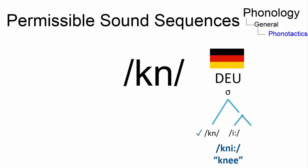In German, /kn/ may occur syllable initially. In present-day English, you won't find this sound sequence in the syllable onset.